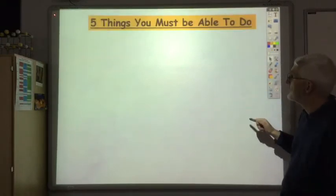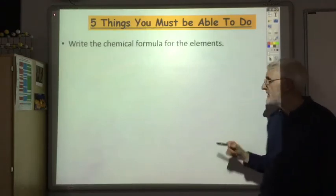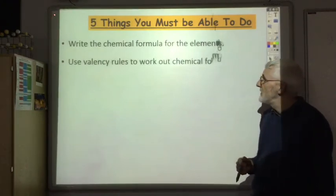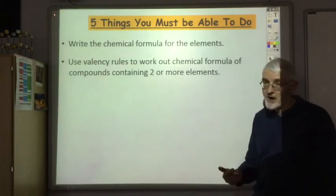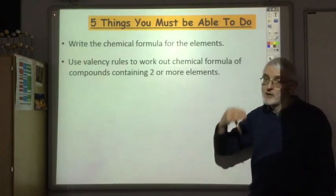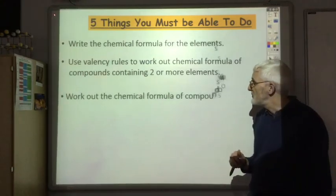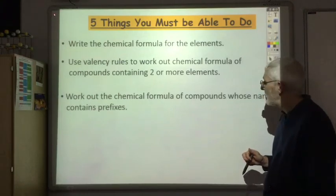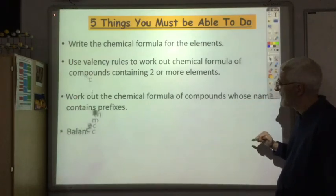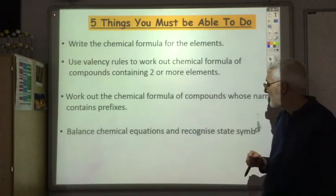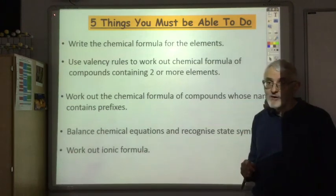So five things you must be able to do: write the chemical formula for all elements including the seven diatomics; use valency rules to work out the chemical formula of compounds containing two or more elements; if it's more than two elements, use the group ion table in your data booklet; work out the chemical formula of compounds whose names contain prefixes such as carbon dioxide and carbon monoxide; balance chemical equations and recognise state symbols; and finally, work out ionic formulas.